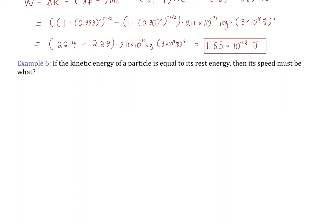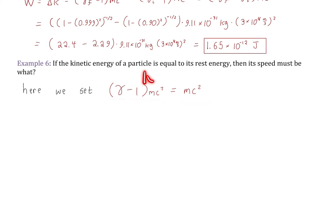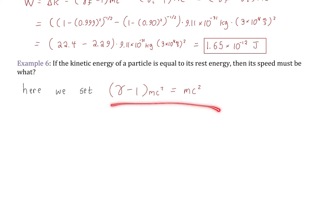Example 6: If the kinetic energy of a particle equals its rest energy, what must its speed be? We set the relativistic kinetic energy expression equal to rest energy: gamma minus 1 times mc squared equals mc squared. The mc squared cancels out, making it independent of mass and the speed of light at this step. We get gamma minus 1 equals 1, so gamma equals 2.